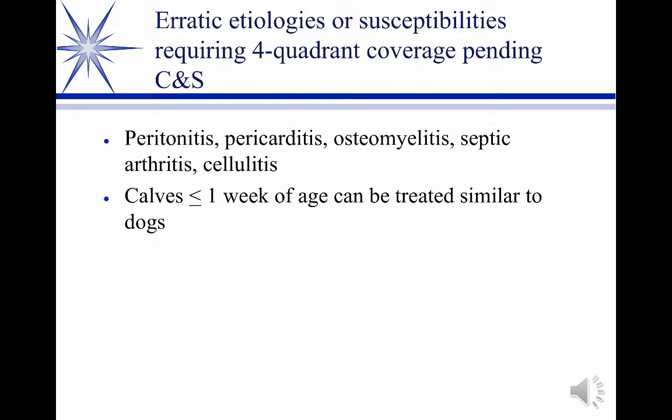Hardware disease is where the cow has ingested a piece of metal, like a nail or a wire, and it moves down to its lowest point in the reticulum. There it can penetrate through the reticulum. Right next to the reticulum is the diaphragm, with the heart on the other side. So the nail goes through the reticulum, through the diaphragm, and into the pericardium, causing pericarditis. That's called hardware disease.